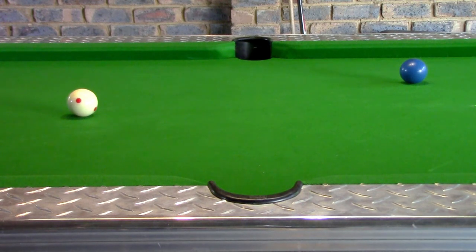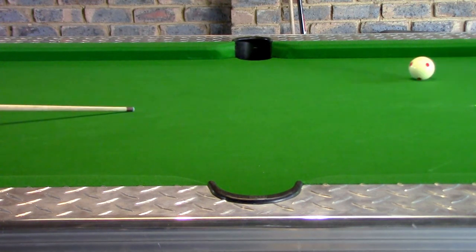If you under-hit the ball the friction will cause it to start rolling forward resulting in a forward motion of the cue ball after impact.